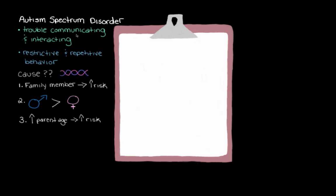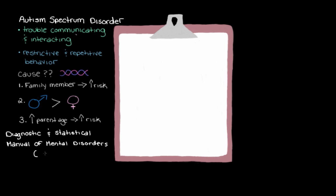We look for the trouble with communicating and interacting, and the restrictive and repetitive behaviors. Diagnosing Autism Spectrum Disorder can be a little tricky, and sometimes it can take quite a while for a diagnosis to be made. To help with diagnosing, there's a really useful manual called the Diagnostic and Statistical Manual of Mental Disorders, or what we often shorten to the DSM.